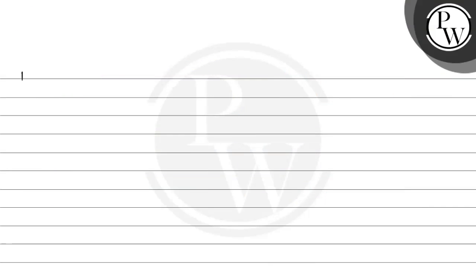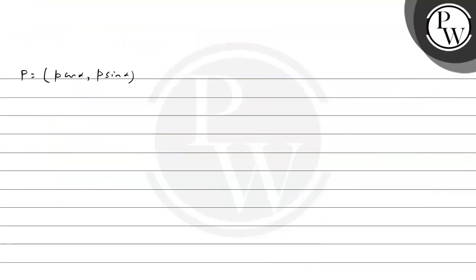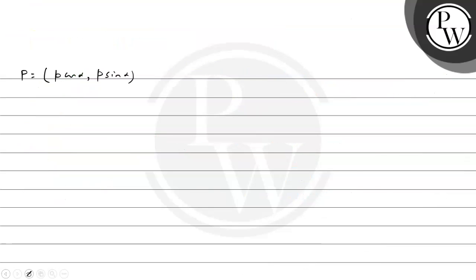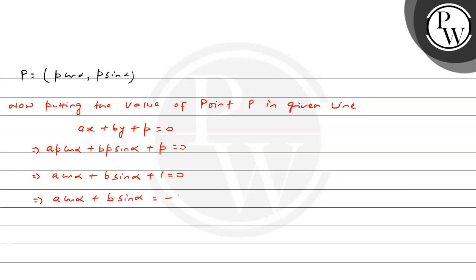So we have found the point of intersection P, which is (p·cosα, p·sinα). Now we have a third line ax plus by plus p equals 0. Putting the coordinates of point P into this line: a·(p·cosα) plus b·(p·sinα) plus p equals 0. Taking p as common, we get a·cosα plus b·sinα plus 1 equals 0.